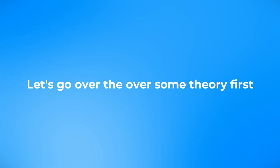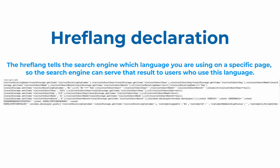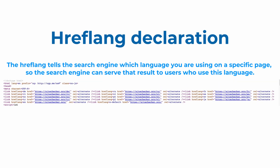First, let's cover the theory of hreflang. The hreflang tells the search engine which language you are using on a specific page, so the search engine can serve that result to users in a specific location or people who use that language.